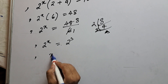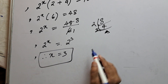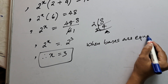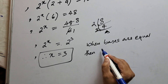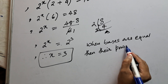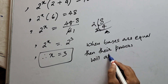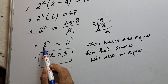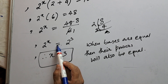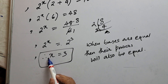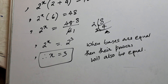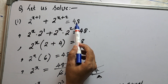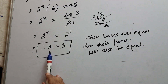The bases are equal — both are 2 — therefore their powers will also be equal: x equals 3. When bases are equal, their powers will also be equal. So from the equation 2 to the power x+1 plus 2 to the power x+2 equals 48, we were asked to find the value of x, and we got x equal to 3.